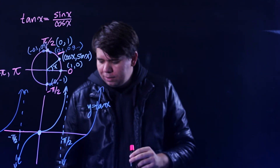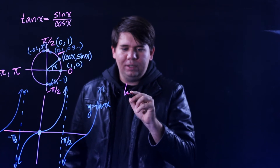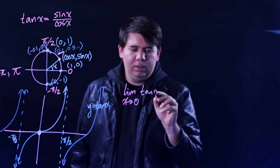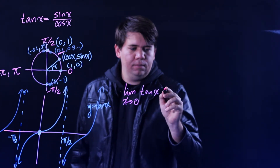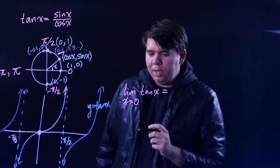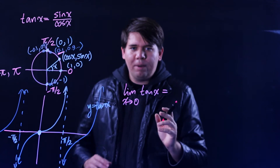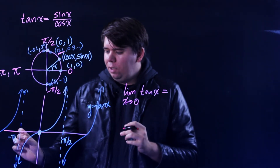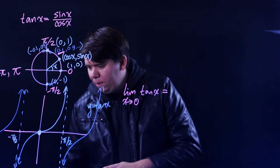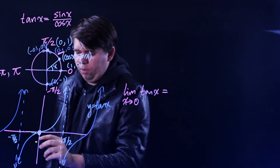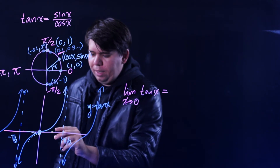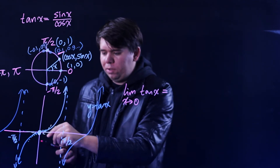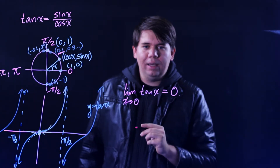Given the graph of tangent, we can now calculate some limits. For instance, what is the limit as x goes to 0 of tangent of x? When we think about a limit, we consider both the left-hand side and the right-hand side. From the left, coming towards zero, the y values approach zero. From the right, the y values also approach zero. So from both sides we get zero, and the limit is zero.